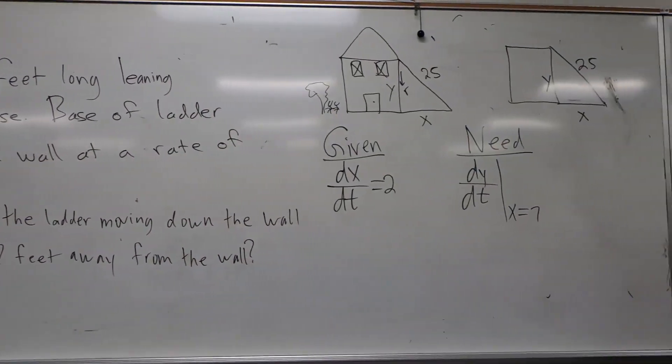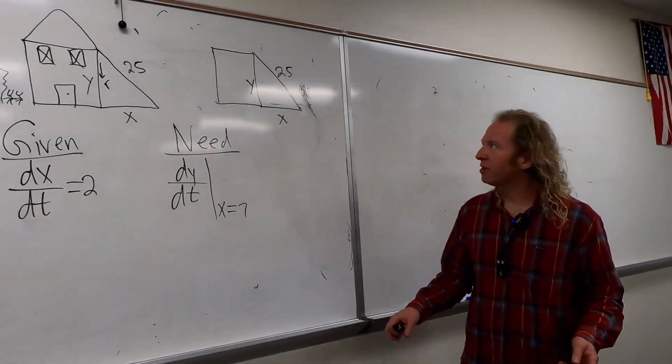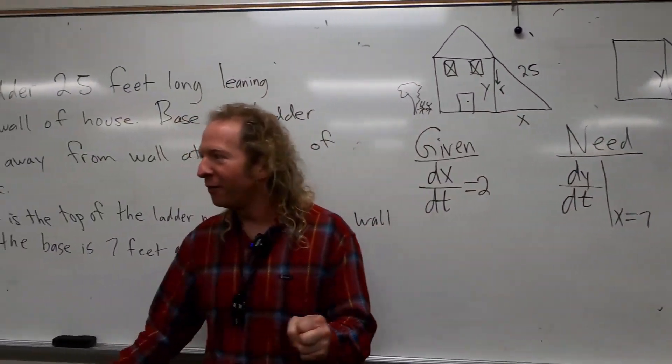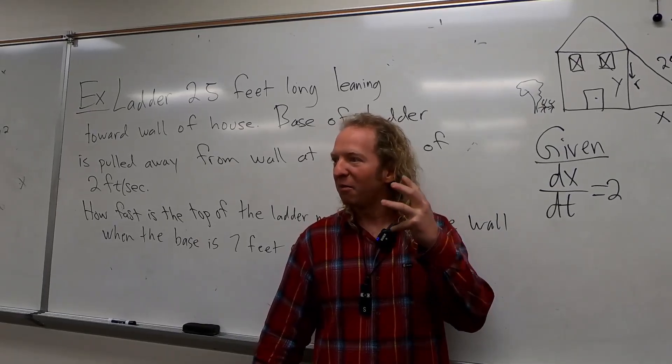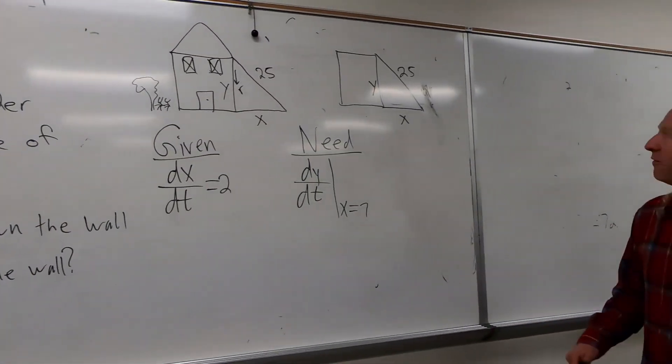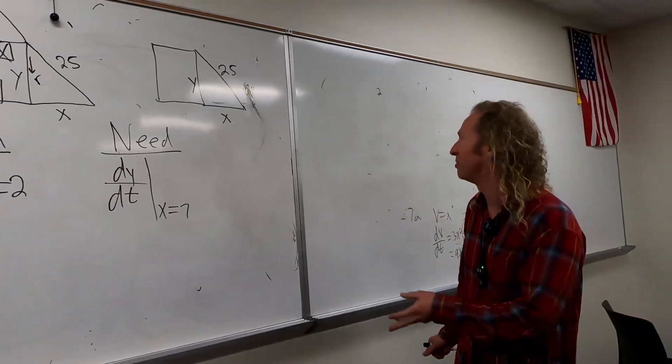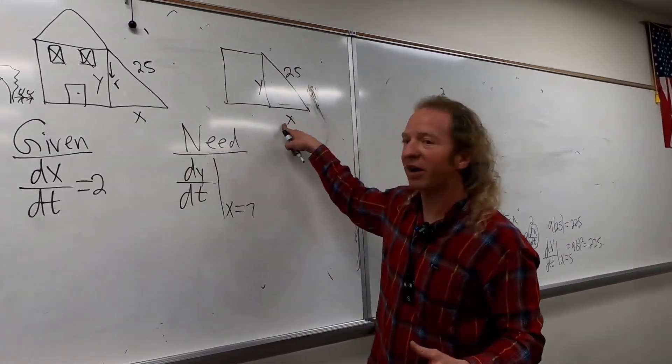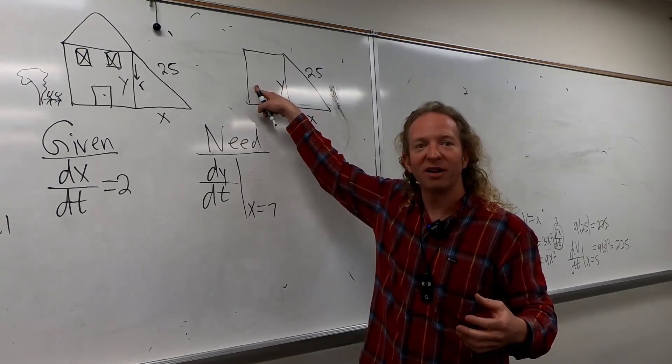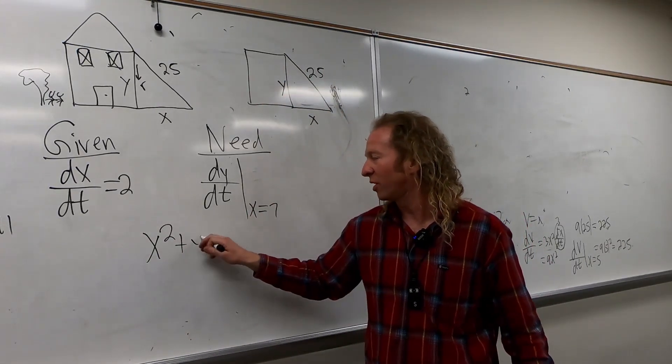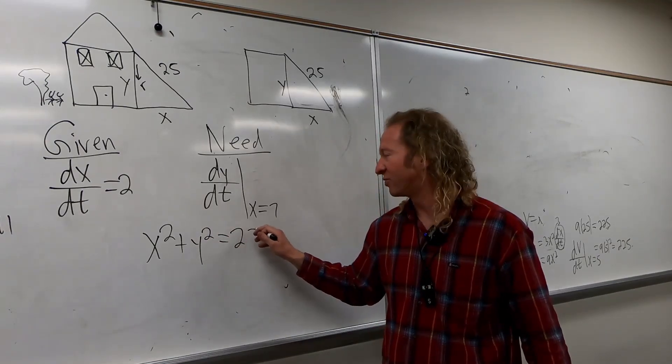We're not given an equation or a formula. So there is something we can use with triangles. There's an ancient theorem. Anyone know what it's called? The theorem of Pythagoras. I used to say Pythagorean. But people would make fun of me. I think it's Pythagorean theorem. So the theorem of Pythagoras says that X squared plus Y squared equals C squared or R squared. So X squared plus Y squared is 25 squared.